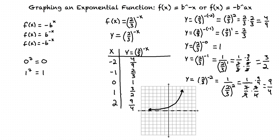For this exponential function, because there was no negative sign in front of our base value b, we assumed that the graph of this function would be entirely above the x-axis, and we can see that this is correct. So when graphing an exponential function, we first need to recognize that because of the horizontal asymptote at y equals 0, the graph will not cross the x-axis. It will either be entirely below or above the x-axis. Then we choose some x values and substitute them into the function to find the corresponding y values. Once we have a few points, we can accurately plot our graph.